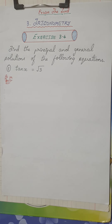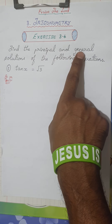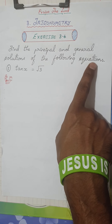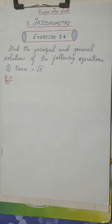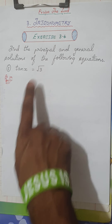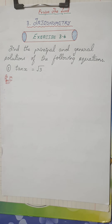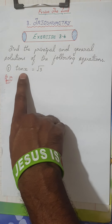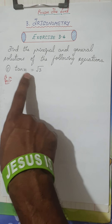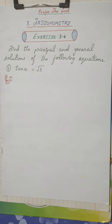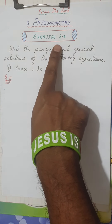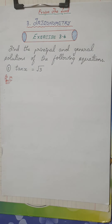Praise the Lord. Hi everyone, welcome back to our next session. Dear students, today we're going to do Exercise 3.4 from the chapter Trigonometry. This is a special video. The question says: find the principal and general solutions of the following equations. You have seen algebraic equations — linear, quadratic, cubic — but tan x = √3, what kind of equation is this? Since tan x is a trigonometric function, this is a trigonometric equation.